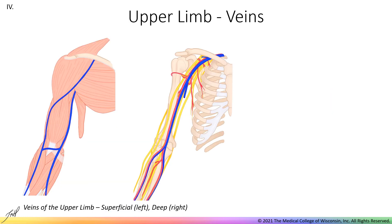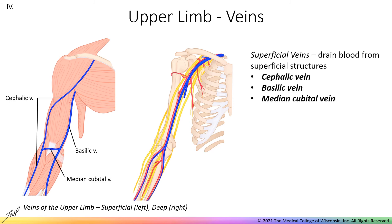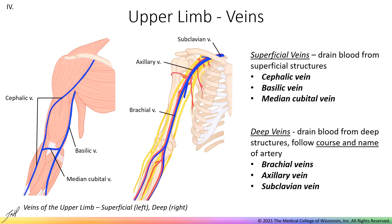Of course, blood also needs to be returned from tissues of the upper limb back to the heart. Superficial veins drain blood from the skin and other superficial structures; these include the cephalic vein, basilic vein, and median cubital vein. Deep veins drain blood from deeper structures and closely mirror the arteries. Brachial veins run with the brachial artery, then merge with the basilic vein to form the axillary vein. The axillary vein then becomes the subclavian vein. Note that the cephalic vein drains into the subclavian vein.